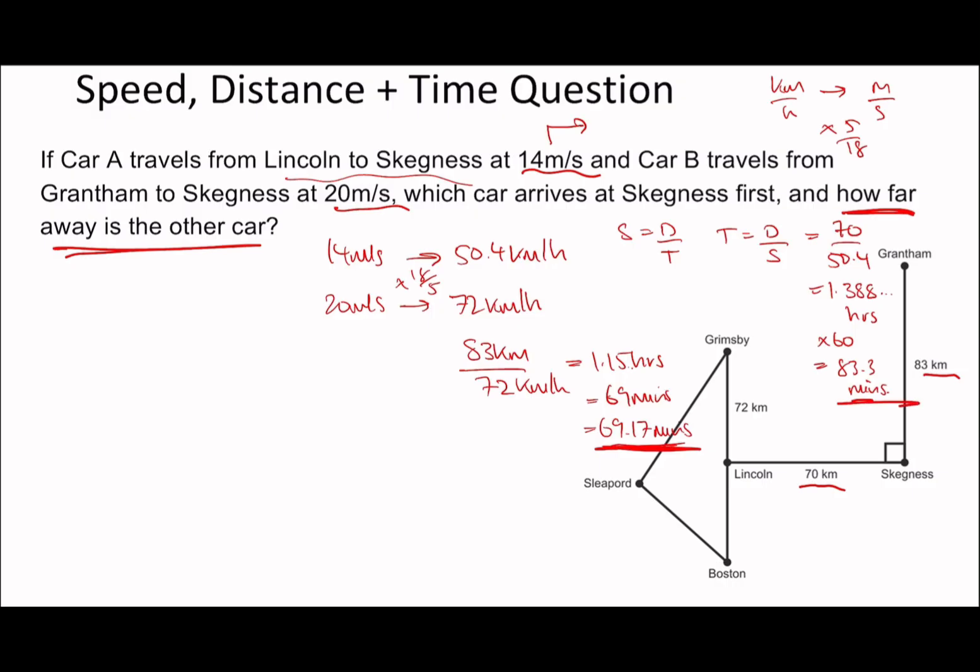Car A takes 83.3 minutes, Car B takes 69.17. We have to take this speed, 50.4 km/h, and multiply by this time, 1.15, to see how far it's traveled. To be really accurate, multiply by this number exactly, times 83 over 72, which gives 58.1 kilometers.